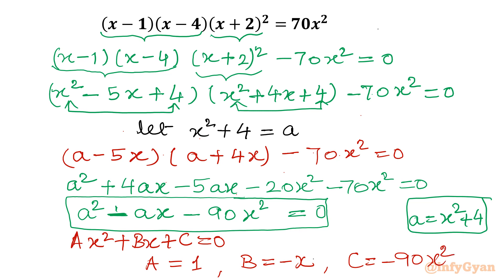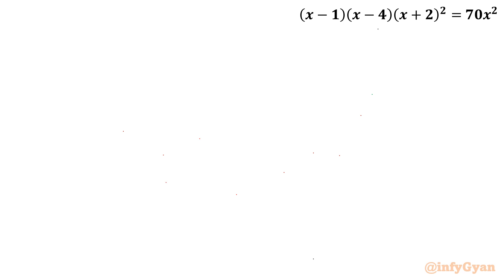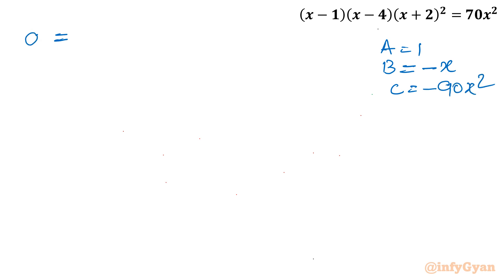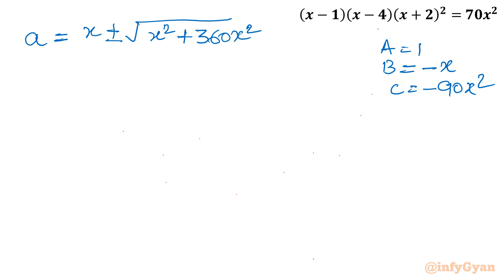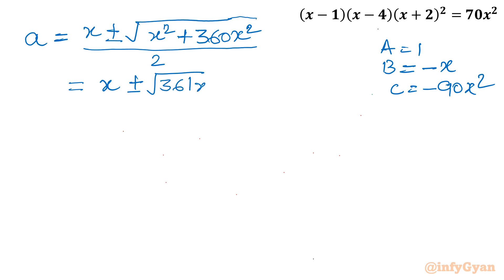So I need to apply the quadratic formula. With A = 1, B = −x, and C = −90x², we get: a = (−B ± √(B² − 4AC)) / 2A = (x ± √(x² − 4(1)(−90x²))) / 2 = (x ± √(x² + 360x²)) / 2 = (x ± √(361x²)) / 2.